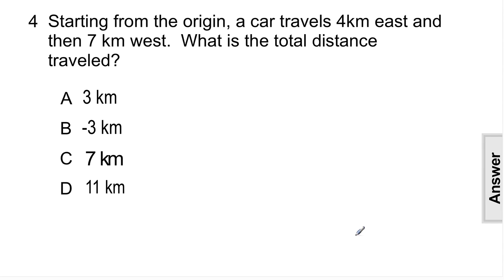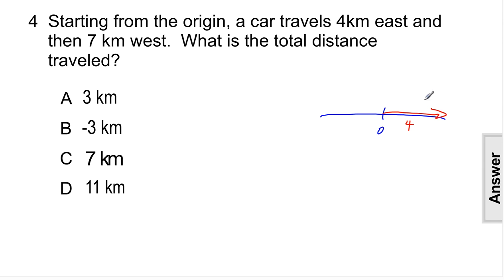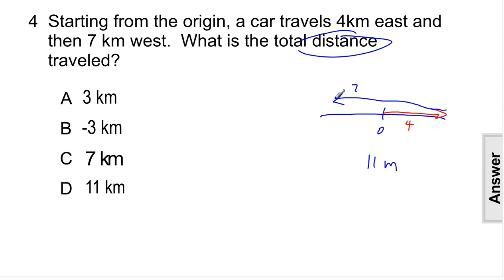Try this: starting from the origin — the zero point on a number line — travel 4 kilometers east, then 7 kilometers west. East is to the right, west is to the left. For distance, you add everything up: 4 plus 7 equals 11 kilometers total. Distance only cares about how far you go altogether, not your direction.